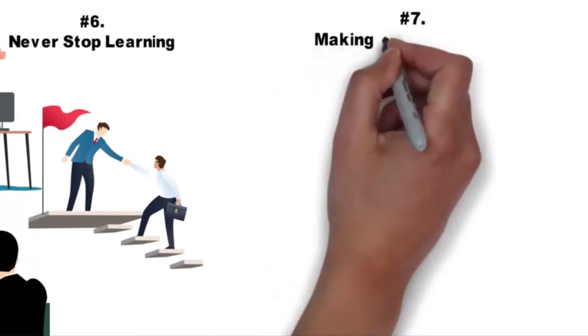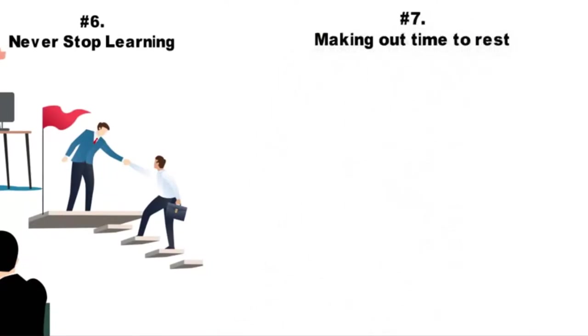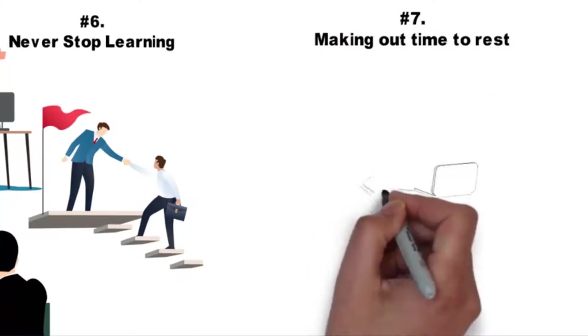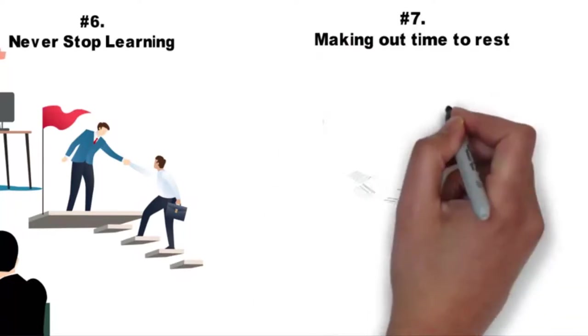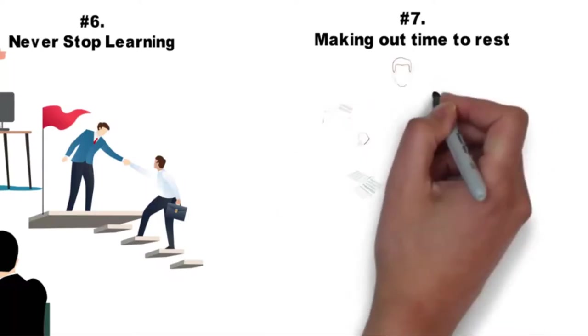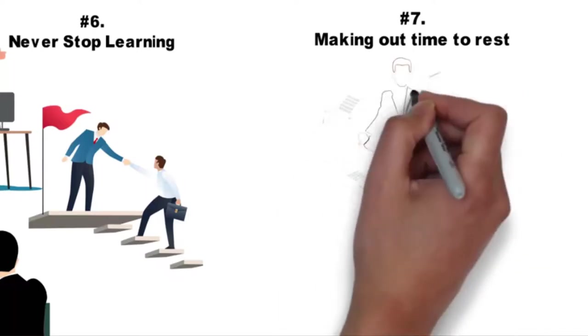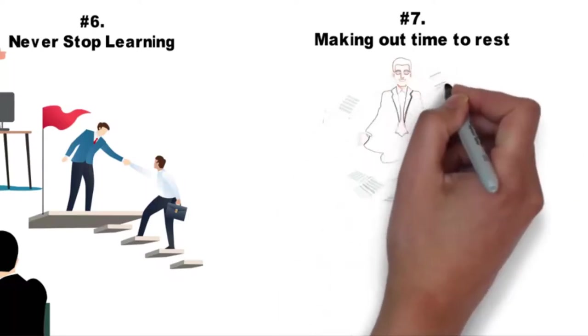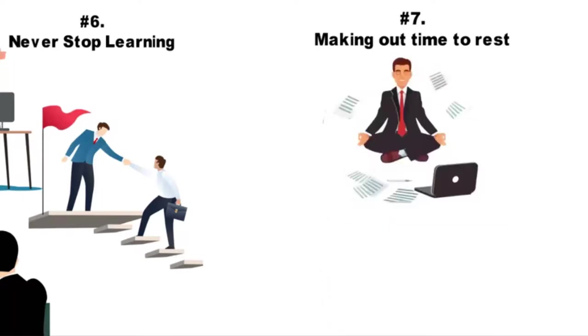Number seven: Making out time to rest. Successful people know they are important, and so is their health. When they get so busy with activities that exhaust them of energies, the plan to retreat comes into play. They embark on vacations without their cellphones and replenish their bodies with mental, emotional, and physical empowerment.